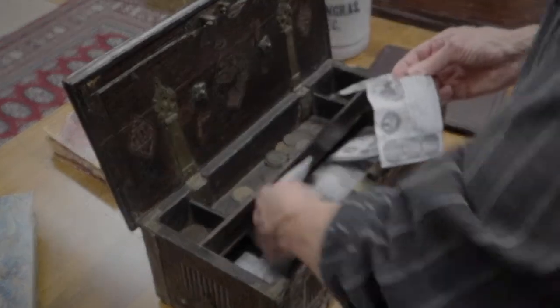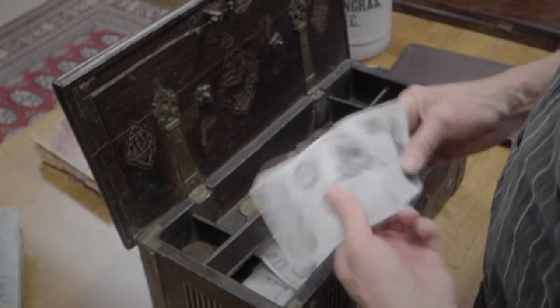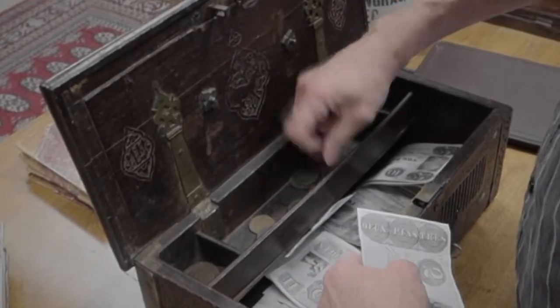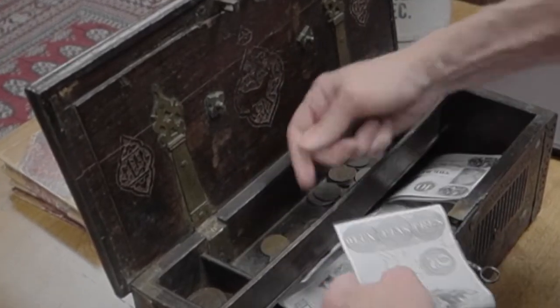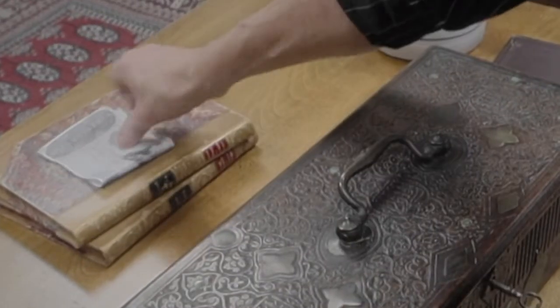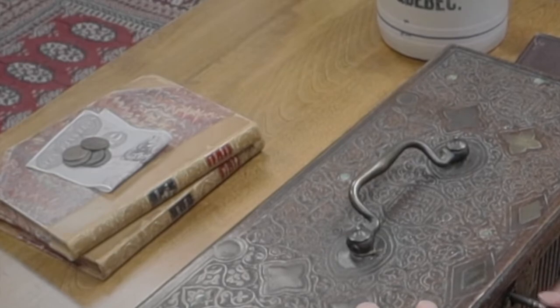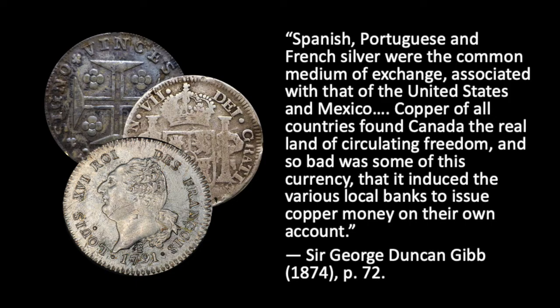In most colonies, small change was in such short supply that most merchants had to make do with bizarre combinations of worn half-penny tokens, low-denomination private notes issued by businesses that may not be able to redeem them, as well as banknotes. Much of the paper currency circulated only at a discount. Sir George Duncan Gibb, writing about circulation circa 1830, noted that even occasional ancient Greek and Roman coins turned up in Montreal. Spanish, Portuguese, and French silver were the common medium of exchange, associated with that of the United States and Mexico. Copper of all countries found Canada 'the real land of circulating freedom.'